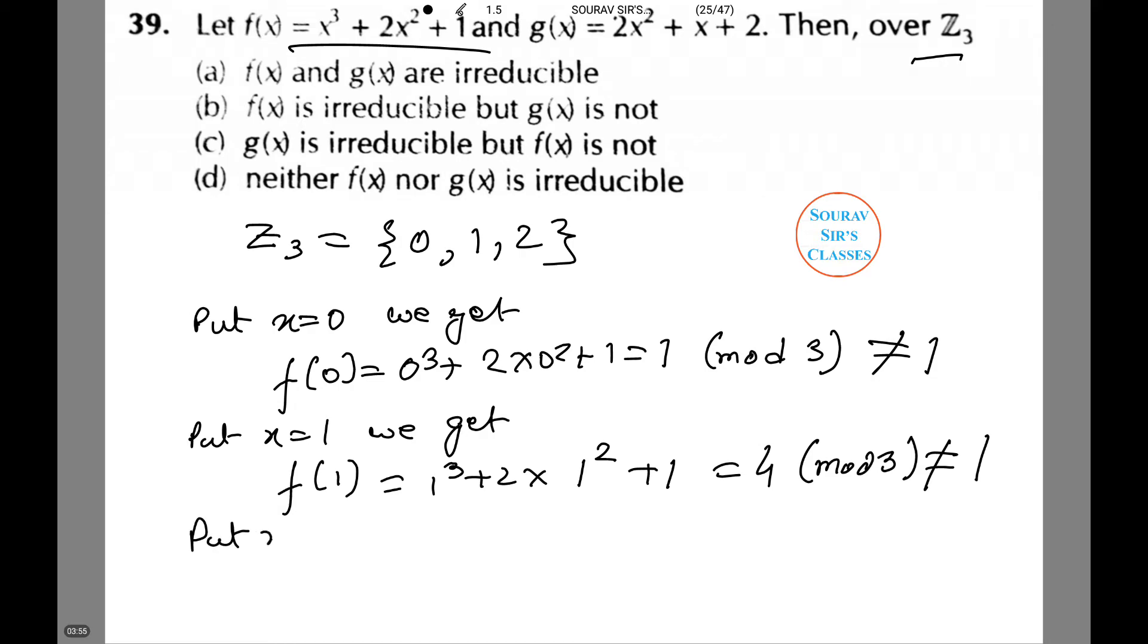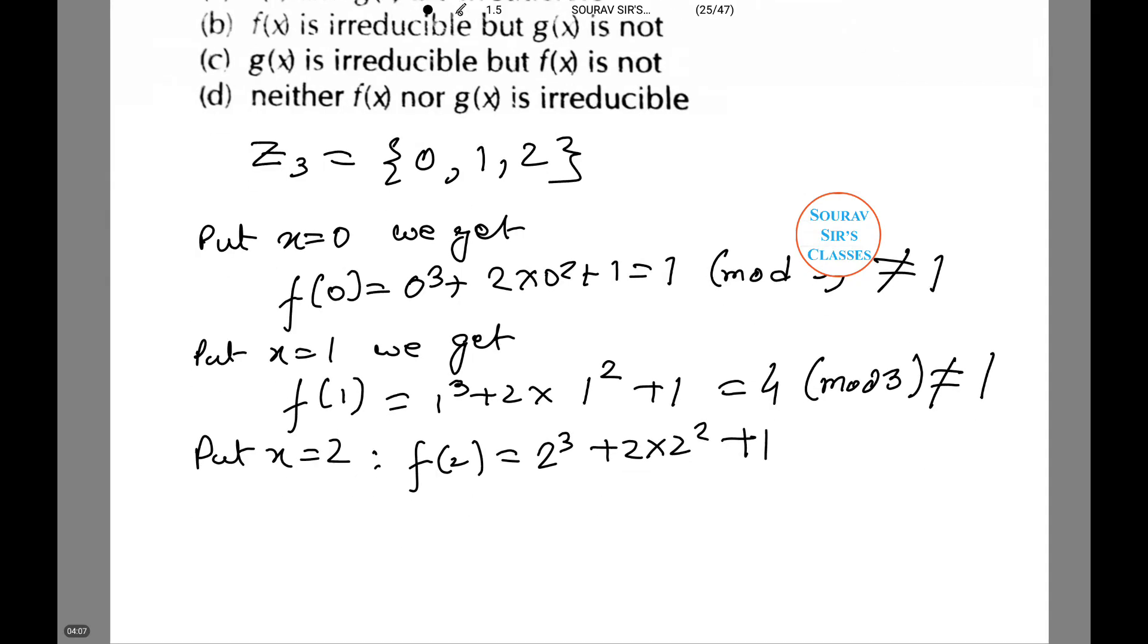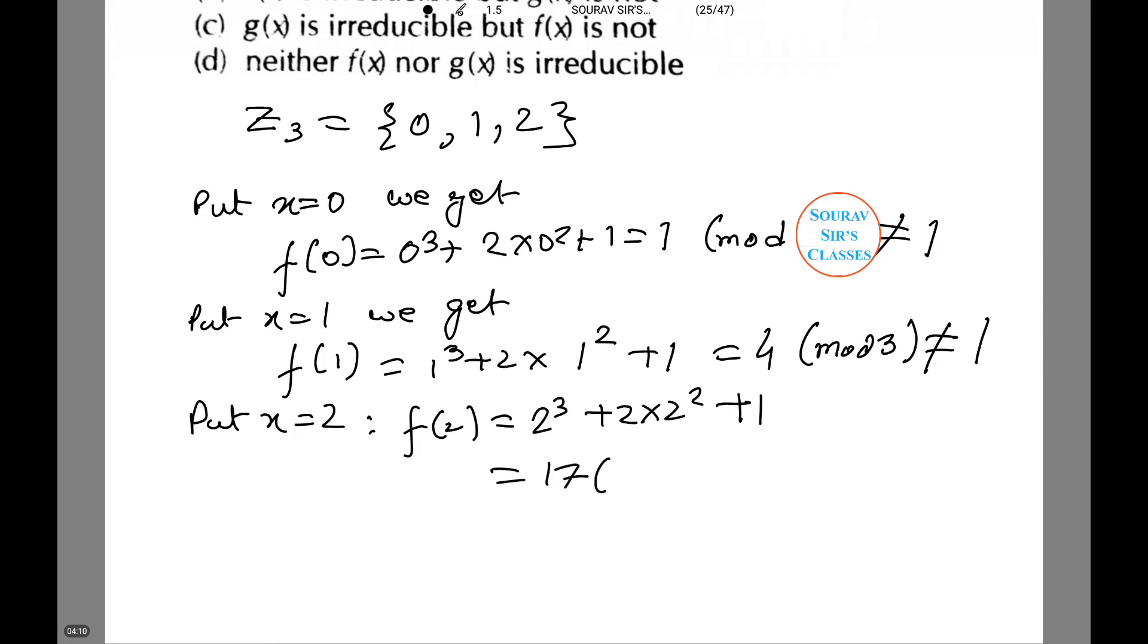Now doing it for number 2, we have f(2) equals 2 cubed plus 2 times 2 squared plus 1, which equals 17 mod 3, or equals 2, which is not equal to 0. Hence, f(x) equals x cubed plus 2x squared plus 1 is irreducible over Z_3.